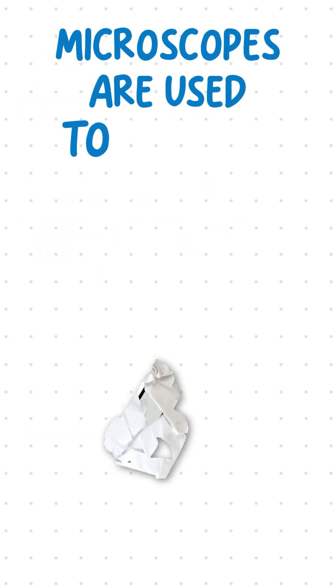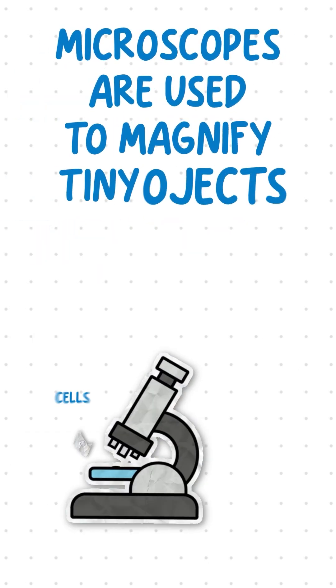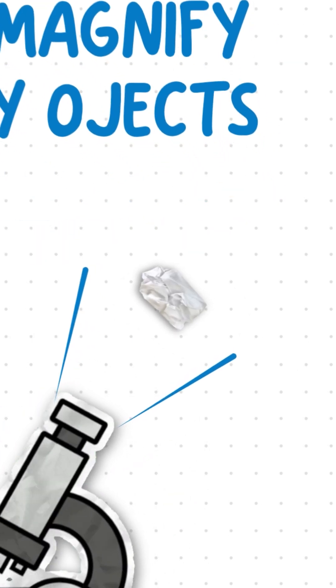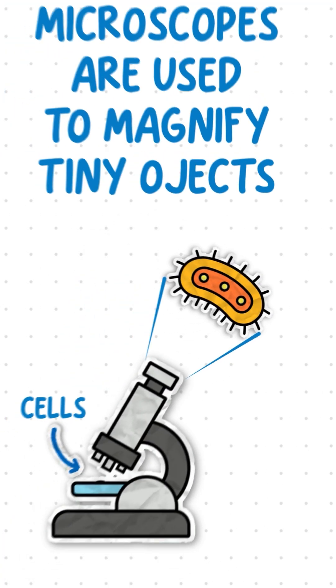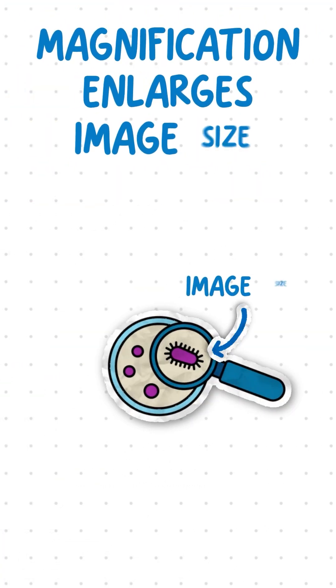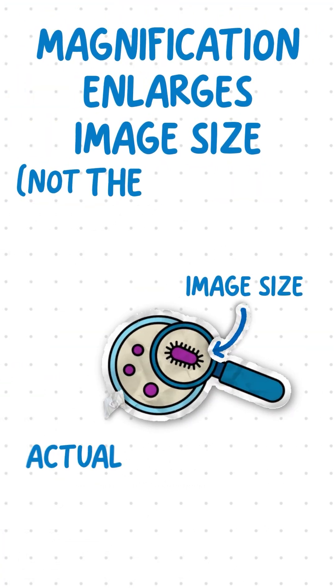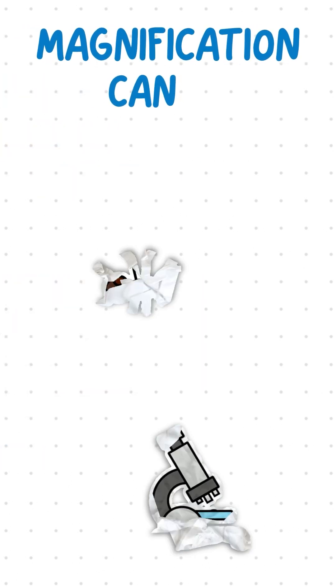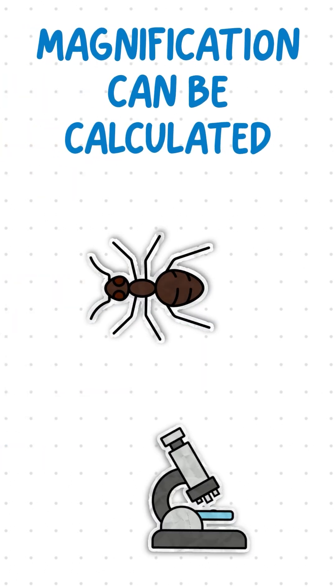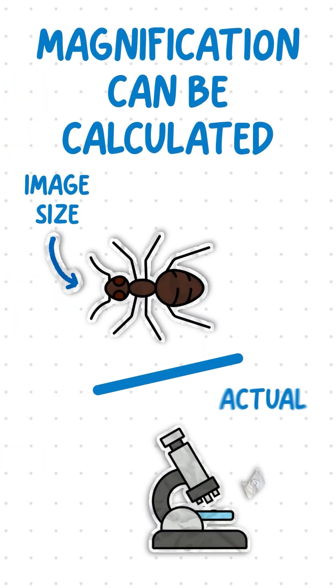Microscopes are used by scientists to magnify tiny objects like cells that are invisible to the naked eye. Magnification enlarges the image size, not the actual size of an object. Magnification of an image can be calculated by dividing image size by the actual size.